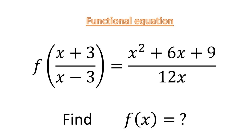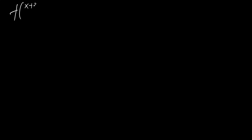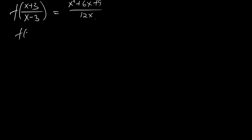We are given a problem where f of (x plus 3) over (x minus 3) is equal to x squared plus 6x plus 9 divided by 12x. Now we are asked to find f of x.